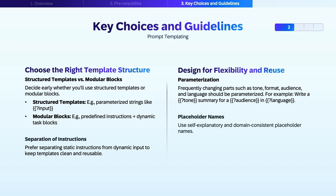Choose the right template structure. When designing your prompt templates, decide whether to use structured templates or modular blocks. Structured templates are traditional parameterized strings using placeholders like input to insert dynamic content — great for consistency and clarity when structure doesn't vary much. Modular blocks offer more flexibility, letting you build prompts using predefined instruction sets combined with dynamic task-specific blocks, useful when prompts need to adapt to different contexts. Whichever you choose, aim to separate static instructions from dynamic input to keep templates cleaner and easier to reuse.